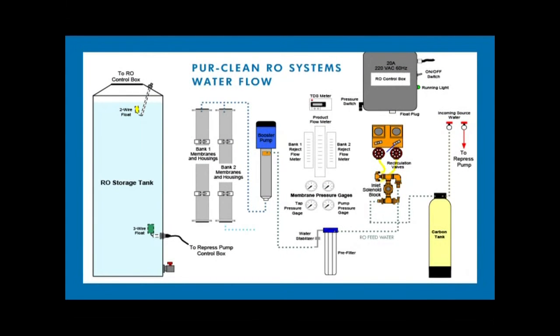Drop 1 then proceeds out as product water through the flow meter and into the RO storage tank. It then enters the pump and is pushed out to the car wash as rinse water.